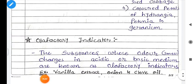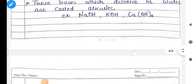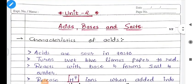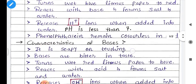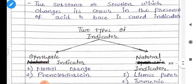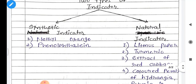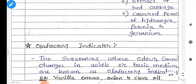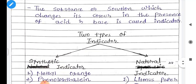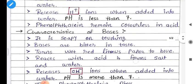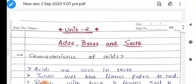So here we have covered the characteristics of acid, base, alkalis and indicator. We will start with the next lecture. Thank you.